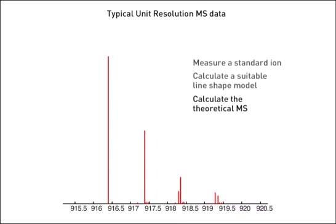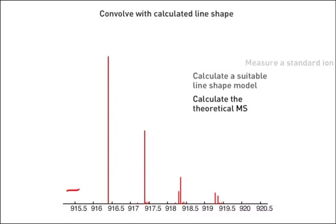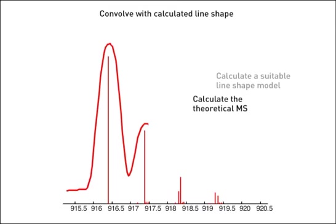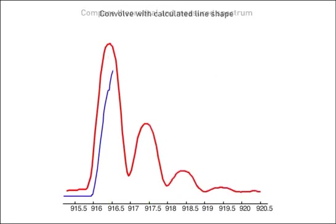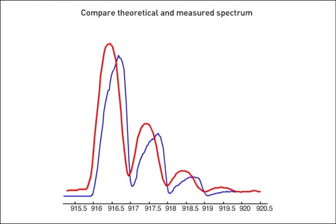However, our real measurement does not have infinite resolution, but we know the approximate resolution from our peak shape estimation. Now, if we simply convolve that defined peak shape function with our theoretical spectrum, we have determined the ideal mathematically defined theoretical spectrum. This is our target calibration function.